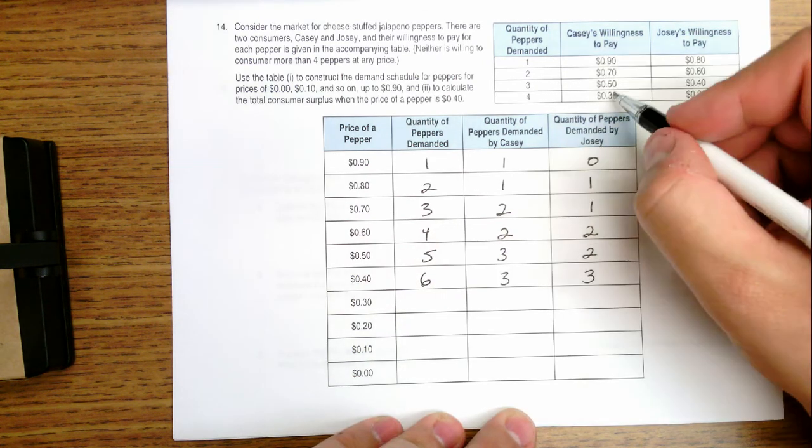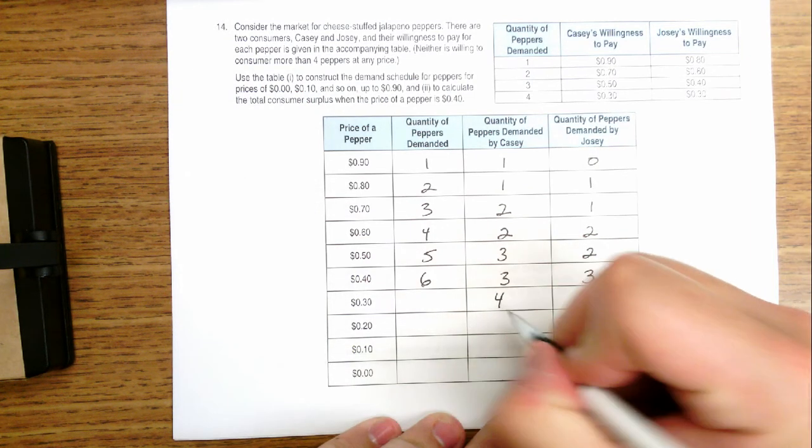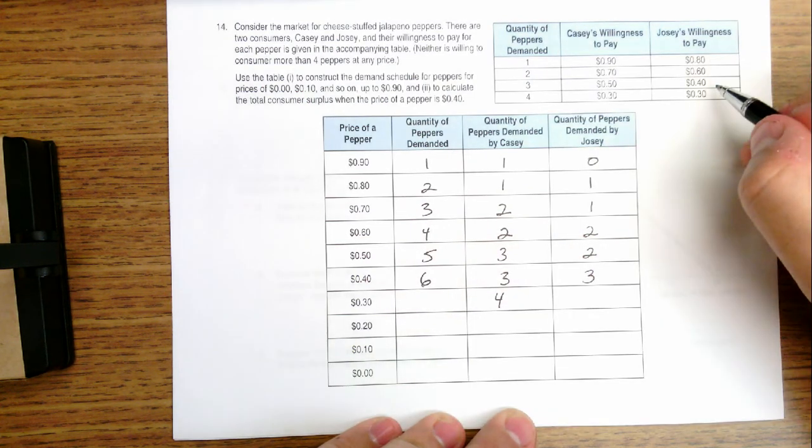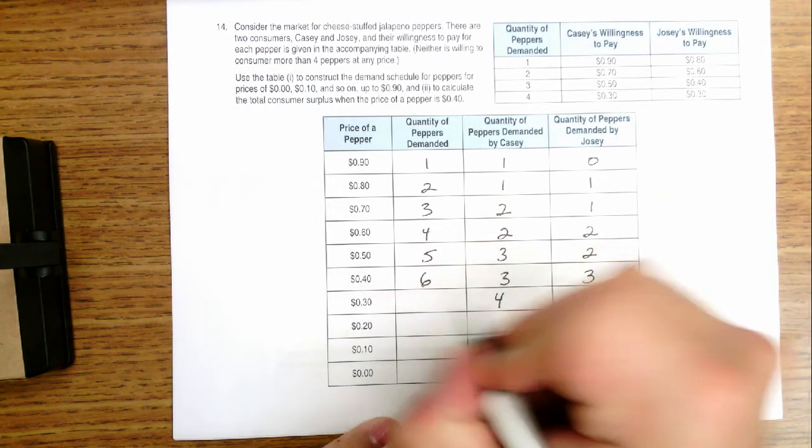At $0.30 now, Casey's willing to buy four. Josie is also willing to buy four. So we would have eight.